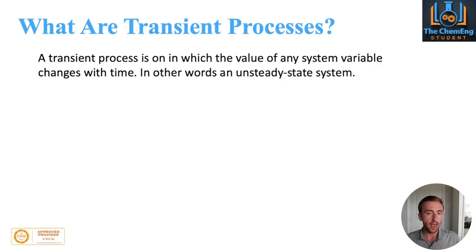So the first question we need to ask is what is a transient process? A transient process is one in which the value of any system variable changes with time. In other words, an unsteady state system. That's essentially what transient means.